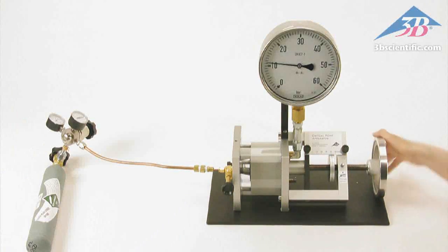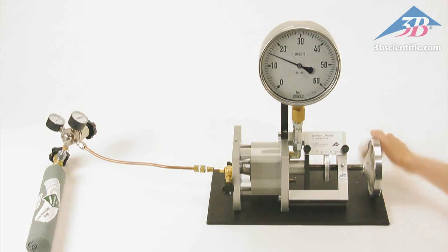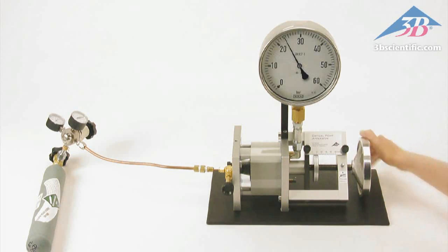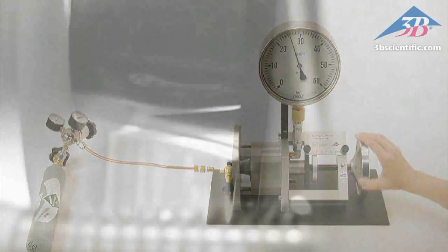Performing the experiment. Turn the handwheel while observing the pressure on the large manometer. SF6 gas will then begin to liquefy at about 27 bar, with a critical pressure of 37.6 bar.